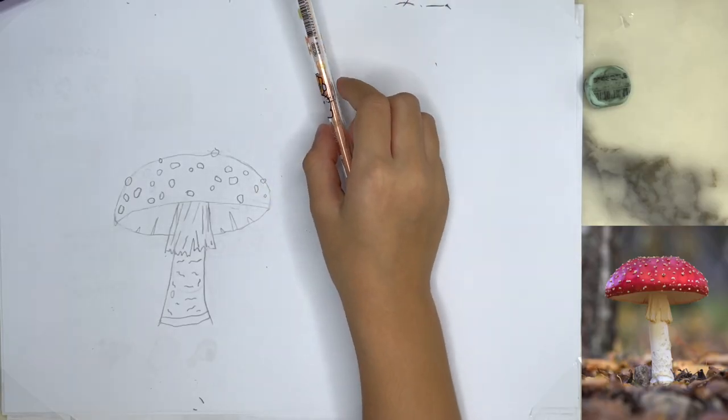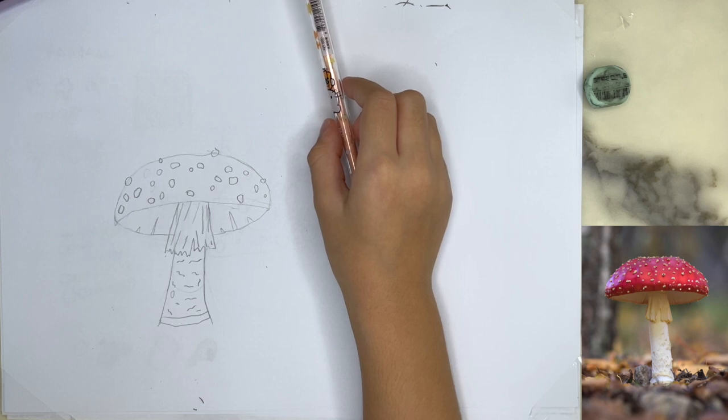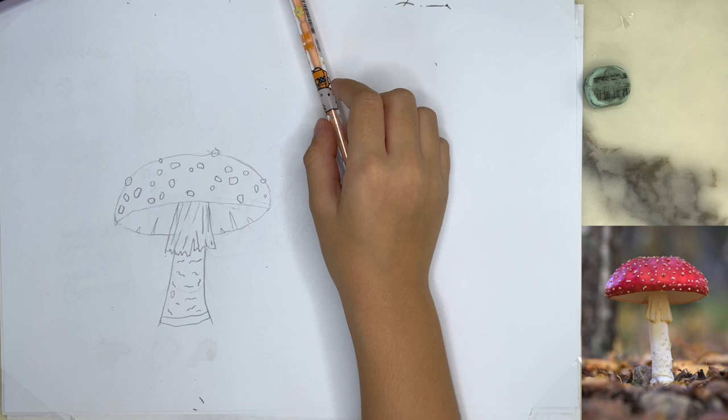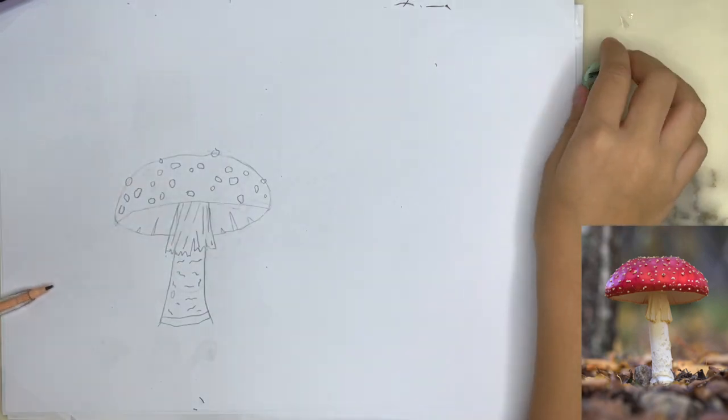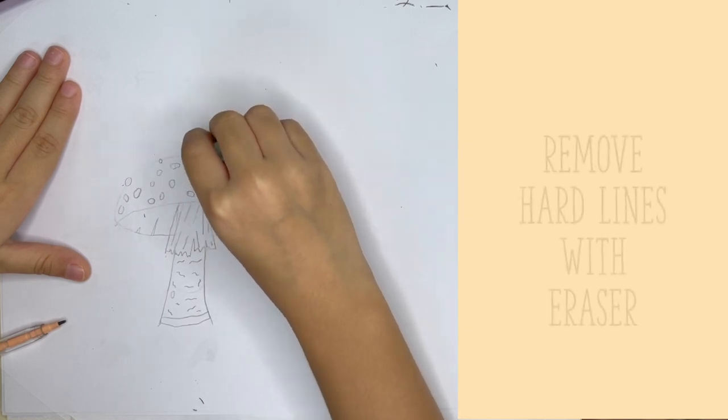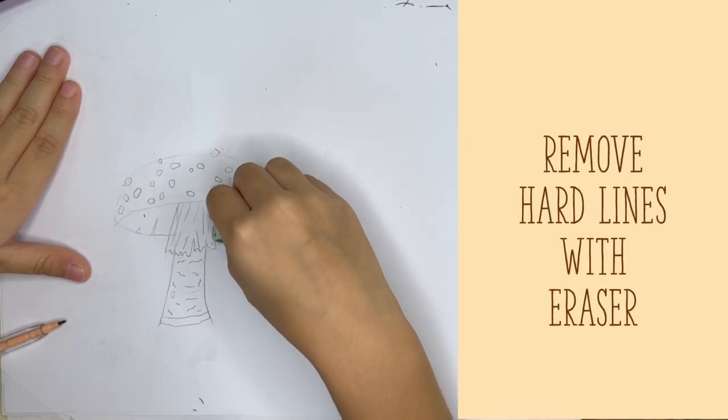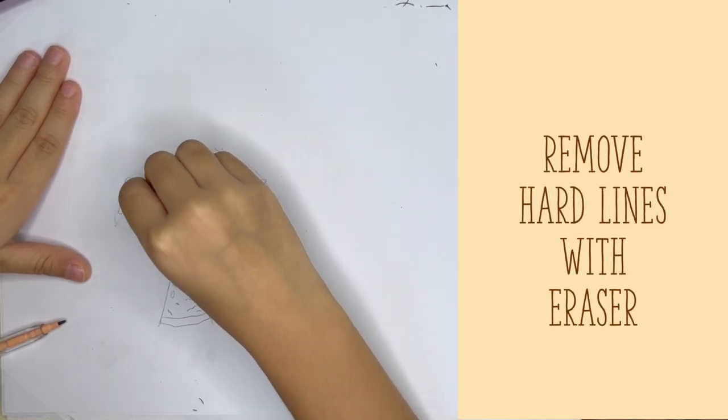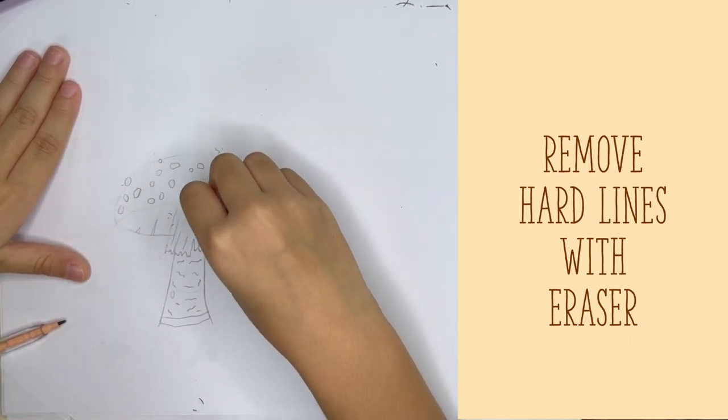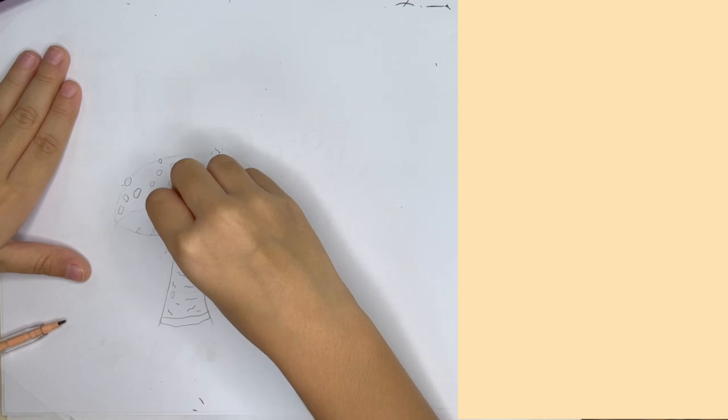Now, step number three is the most challenging. This is where we give the object a 3D feel. By using three different colors or shades with our pencil, we will give some depth to the mushroom and make it pop right there on the page. First, we need to remove the hard defining pencil strokes that we made when we drew the shape of the mushroom. This has served its purpose, but now we remove it to make the mushroom look more real.